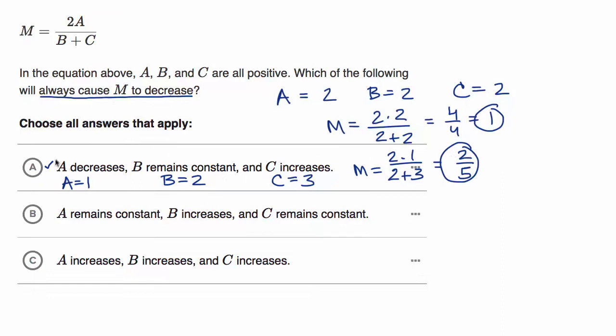We could reason through it a little bit more. We could say, if A is decreasing, that's going to decrease our numerator, which is two A. If A decreases and A is positive, then two times A will decrease. And if you decrease a numerator, that's one way to decrease a fraction. Now, the other things they tell us, B remains constant, so that by itself won't change the denominator, but they say C increases.